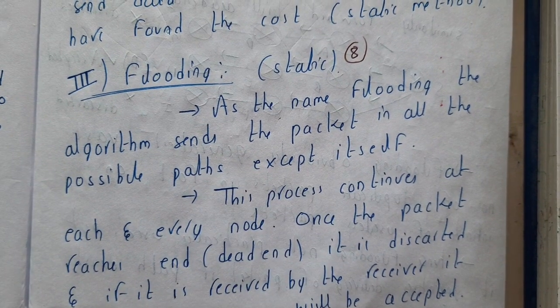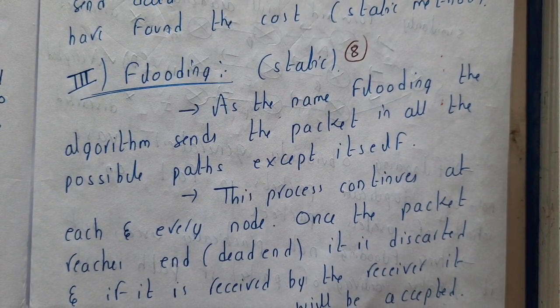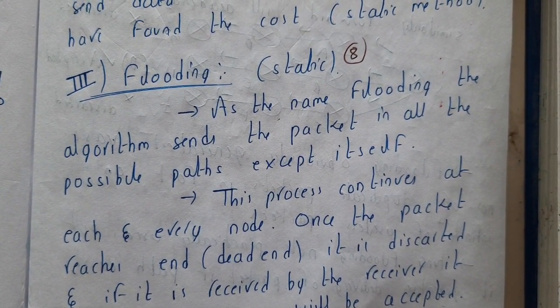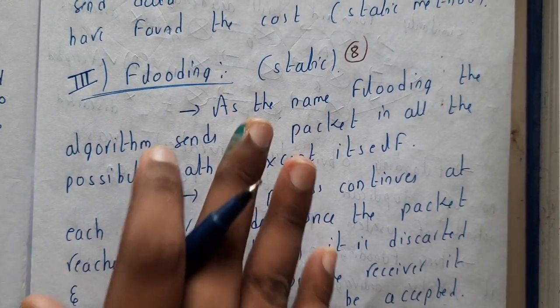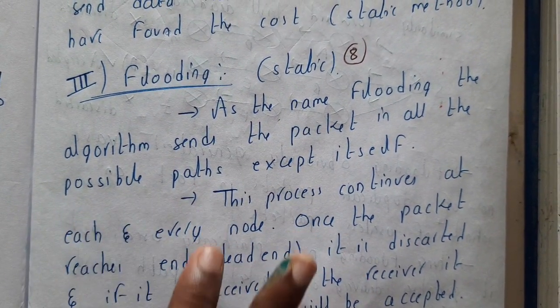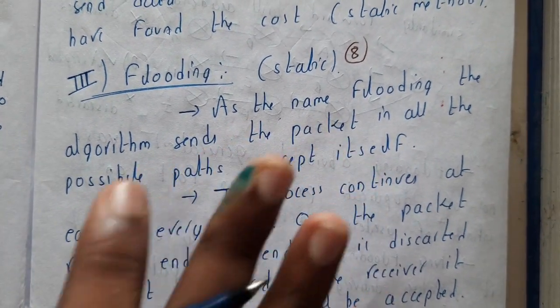Here also we will be doing the same process - we will flood the data. Flooding means it will be going in all possible paths, just like water will be going in all possible paths. Similarly, we will be sending the packets in all possible paths. That's the simple logic in flooding.